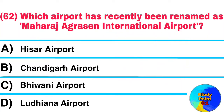Question No. 62. Which airport has recently been renamed as Maharaj Aghrasen International Airport? Answer: Hisar Airport.